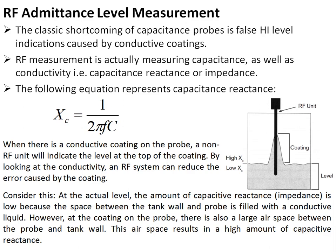At the actual liquid level, the capacitive reactance (impedance) is low because the space between the tank wall and the probe is filled with conductive liquid. However, at the coating, even though capacitance appears high, there is a large air space between the probe and the tank wall, resulting in high capacitive reactance. The electronic circuitry measures this high impedance in the coating area and counteracts the error caused by the capacitive coating, which would otherwise inflate the capacitance reading.